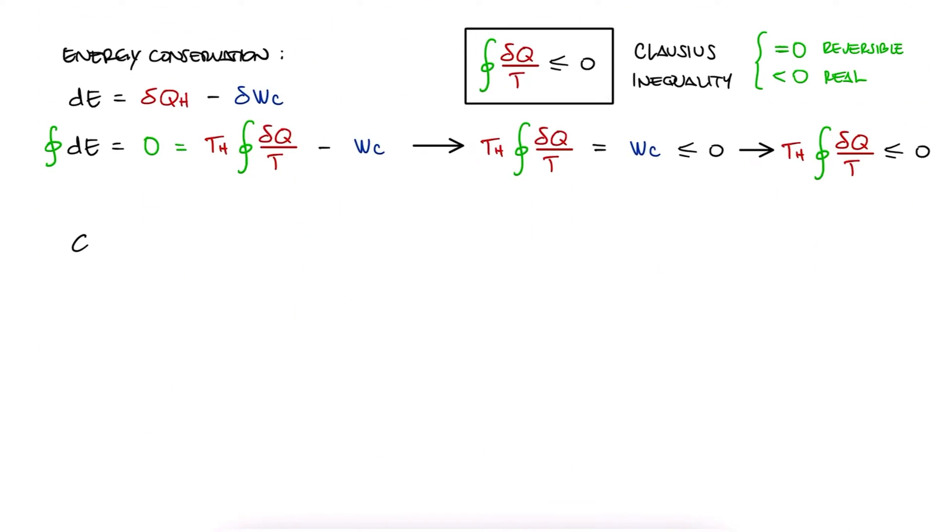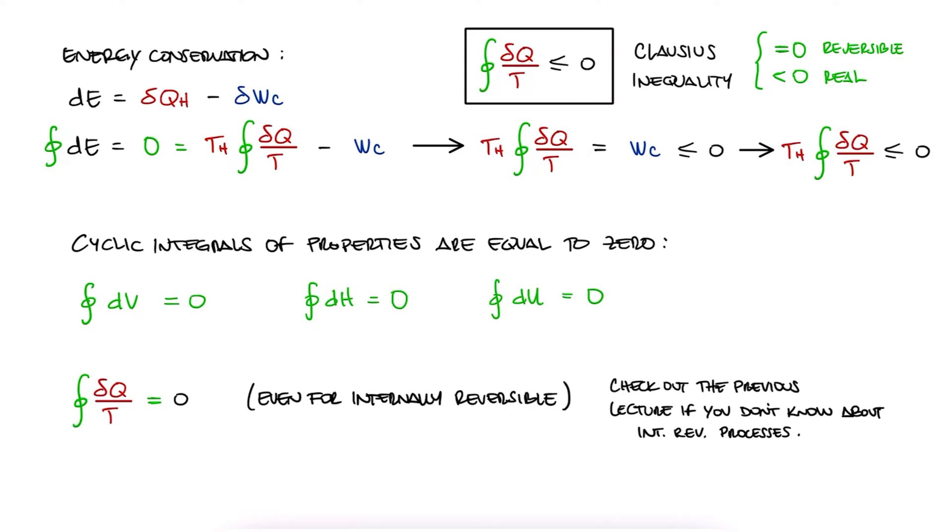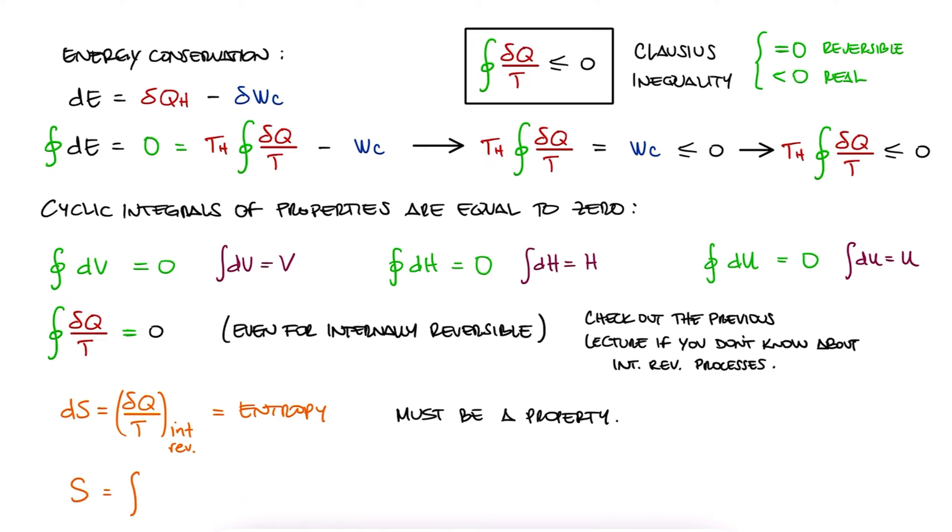Now, think about this. The cyclic integral of any property we have will be zero. D volume, d enthalpy, d internal energy. Any of these after a full cycle would go back to their original value, meaning that they gained or lost a zero value. So, for reversible processes, and these can just be internally reversible processes where the cyclic integral is zero, what's inside the integral must also be a property. And this is what we call entropy, extensive as capital S in kilojoules over Kelvin.